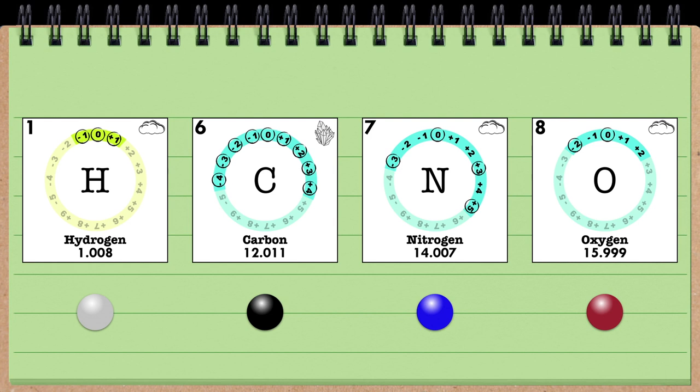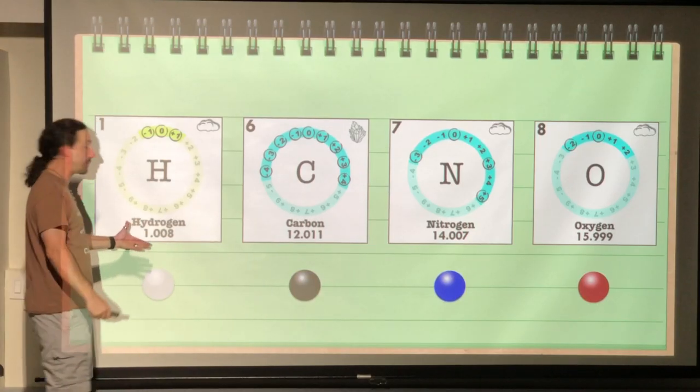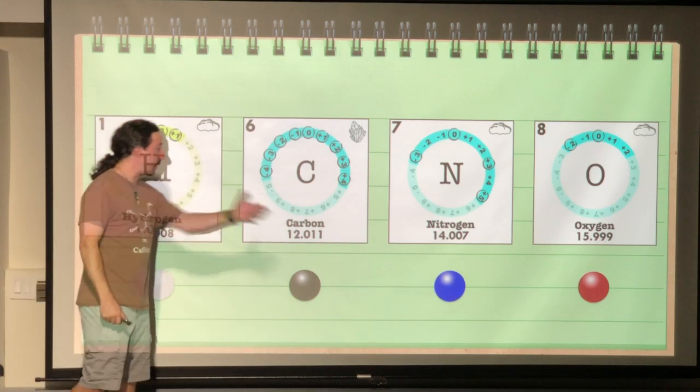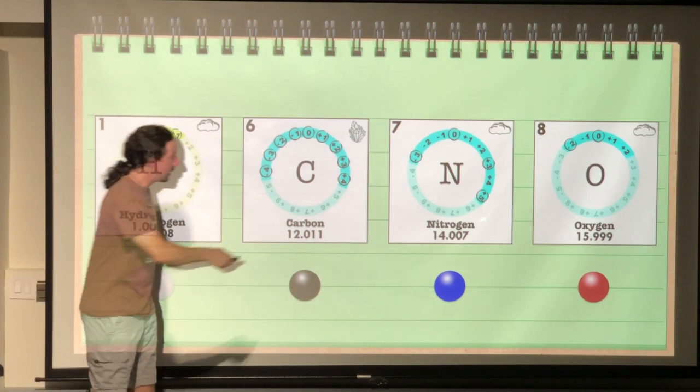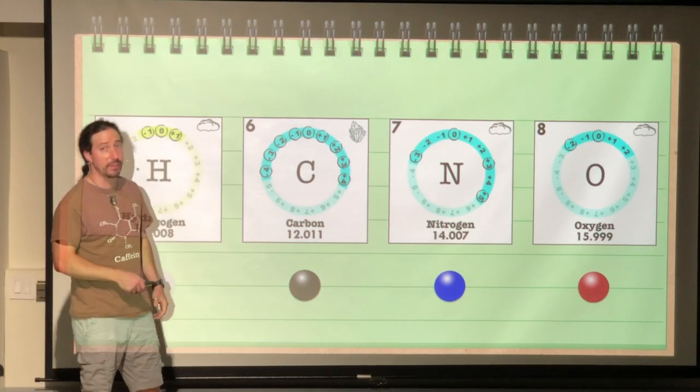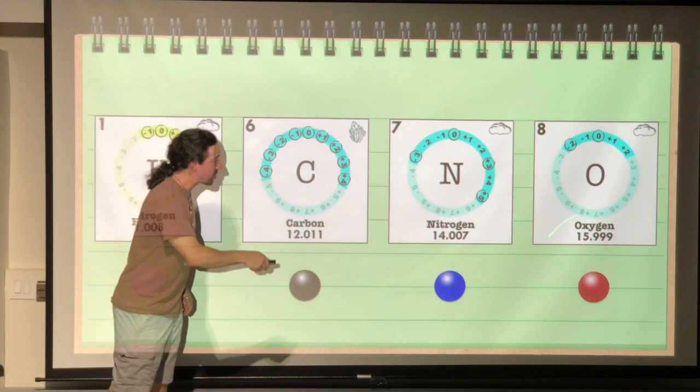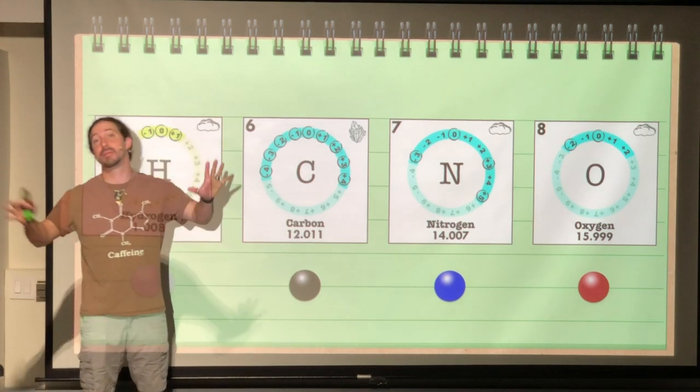The next thing also to recognize is each of these elements has a different mass. They all are like a different size. Hydrogen has a mass of approximately 1. Carbon has a mass of approximately 12. Nitrogen has a mass of approximately 14. And oxygen has a mass of approximately 16.